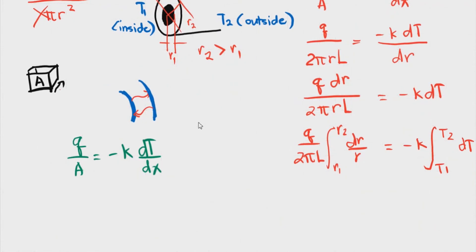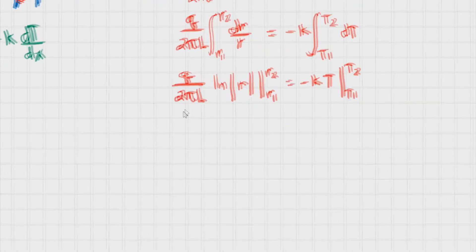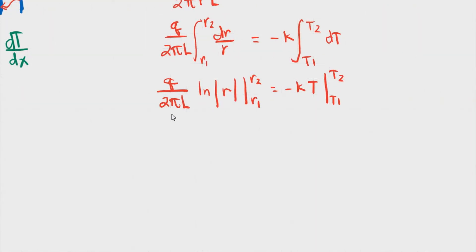The antiderivative of dr over r is simply the natural logarithm of r. So with that, we have ln of r evaluated from r sub 1 to r sub 2 and this one is negative k. This is simply t evaluated from t1 to t2.